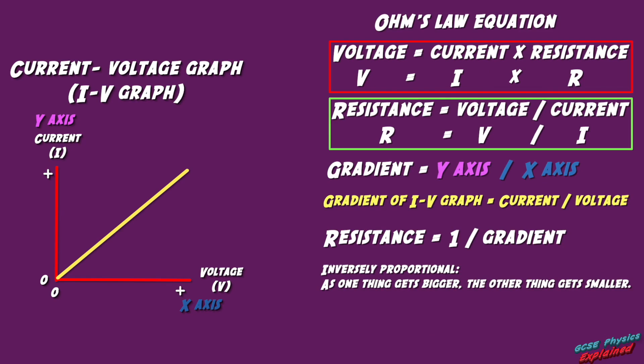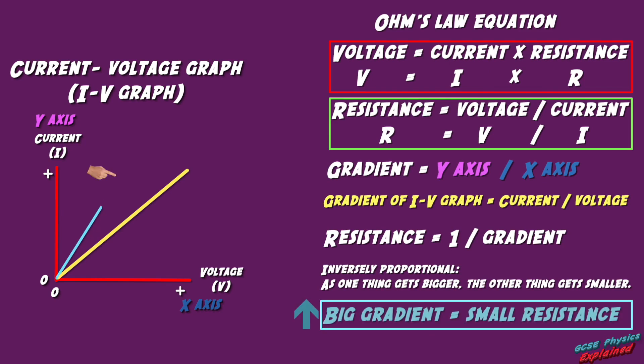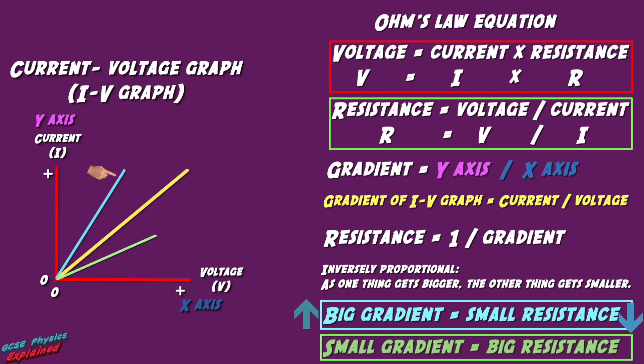So if you've got a steep gradient or slope, that means you've only got a small resistance. And if you've got a gentle gradient or slope, that means you've got a big resistance.